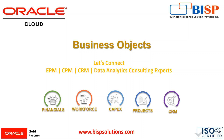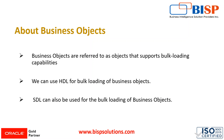In order to understand what HDL is capable of, it is very important for us to understand the business object structure, because HDL loads business objects and they are all different in nature. We have to understand each and every object we have in our HCM Cloud. Business objects are referred to as objects that support bulk loading capabilities, and with the help of business objects we can load bulk data in our Oracle HCM Cloud using HDL.